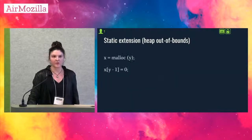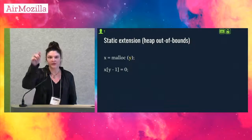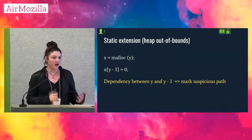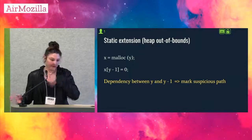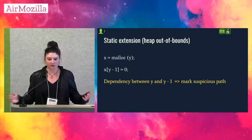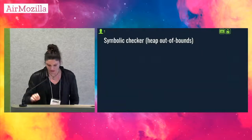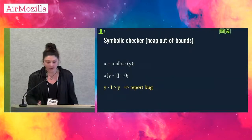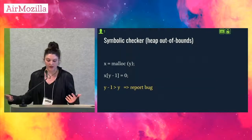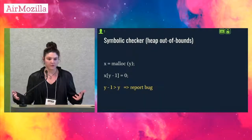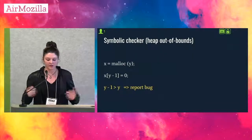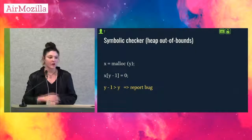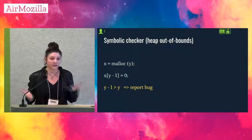So how did we find this bug? The static extension looks for cases where there's a dependency between the allocation size and the index off the object. In this case, you can see there's a dependency between y and y-1, so we flag this as a suspicious path. But obviously not all cases with this dependency are going to be a bug — that's why we need symbolic execution. Symbolic execution asks: is it possible for this write to be out of bounds? Is it possible for y-1 to be greater than y? If y is 0, then yes — the symbolic checker reports a bug because a negative value is way bigger than zero as an unsigned integer. The only reason we can do this is because symbolic execution can reason across all possible values of y.